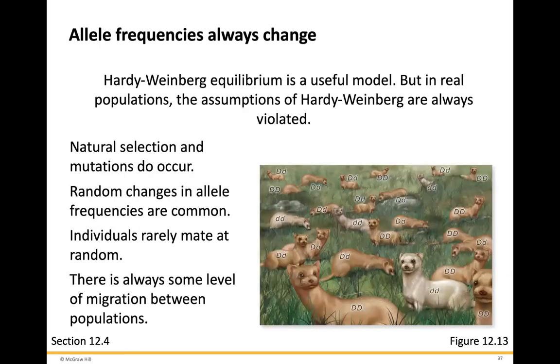Allele frequencies are always going to change. Hardy-Weinberg equilibrium is a useful model, but in real populations the assumptions of Hardy-Weinberg are always going to be violated. Natural selection and mutations do occur. Random changes in allele frequencies are common. Individuals will rarely mate at random, and there is always some level of migration between populations.